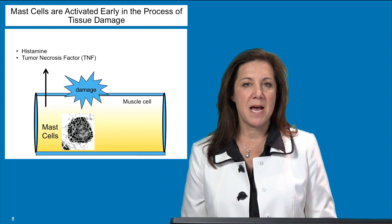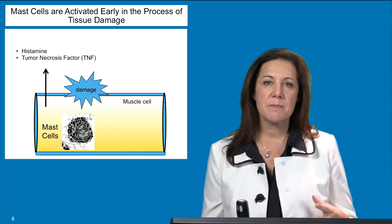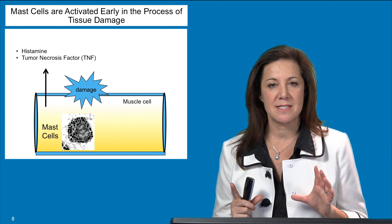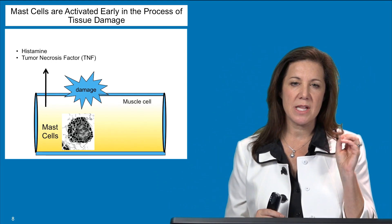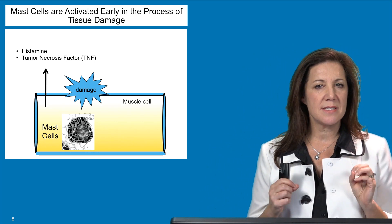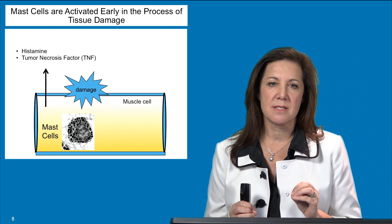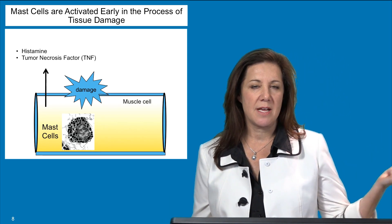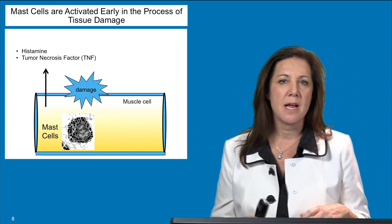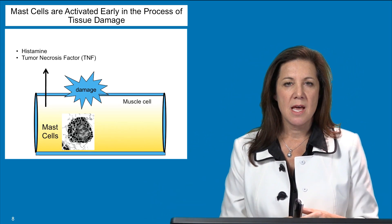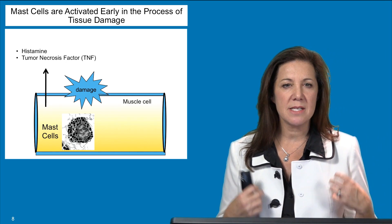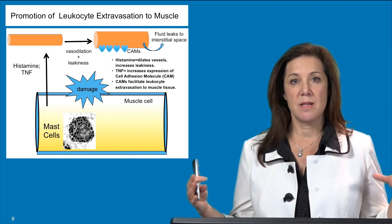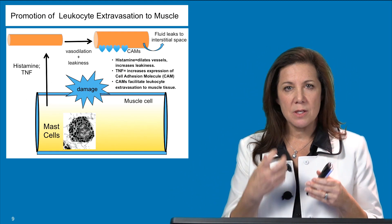Next, mast cells in the tissue release histamine and tumor necrosis factor. On this slide you can see an electron micrograph of a mast cell with very large dark granules inside, ready to be released — a very important part of inflammation. If you've had a sprain or a large contusion, you know you get swelling, and that is because of these mast cells.